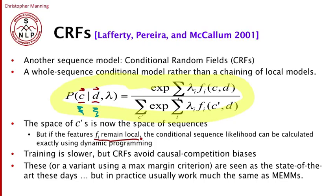So let me just mention these, and say that these days, using CRFs, or variants of them that use a max margin criterion coming out of SVMs, are seen as the state of the art method for doing sequence models. And there are various bits of software, including Stanford's software for named entity recognition that you can download that implement CRFs.